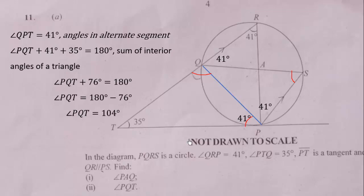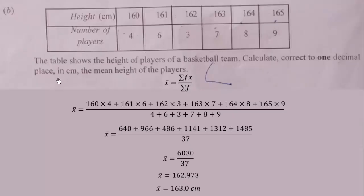Now let's look at part B of the question. The table shows the height of players of a basketball team. We are to calculate, correct to one decimal place in centimeters, the mean height of the players. We know the mean height is given by summation of the frequency times the values.